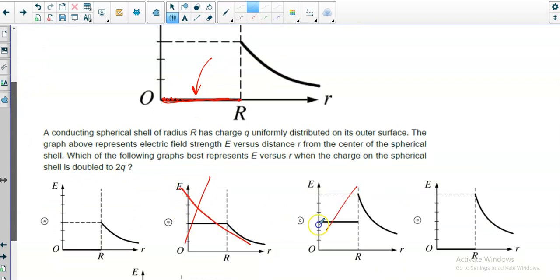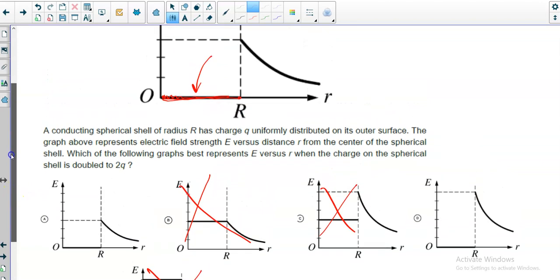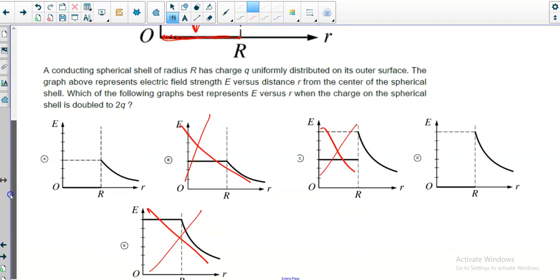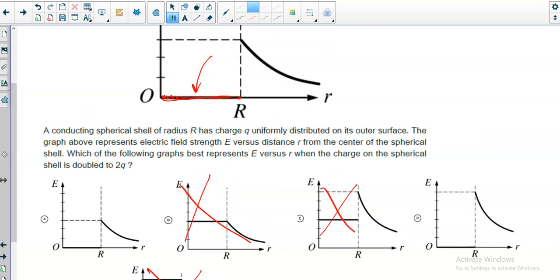I'm going to rule out anything that doesn't have that. So right away, no, no, and hell no. So we're down to two options. Now, this one shows the field strength of being three tick marks up. This one shows the field strength being six tick marks up.